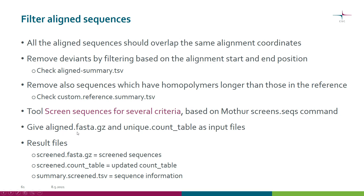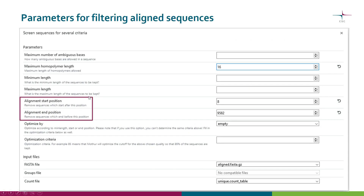As input you give the aligned FASTA file and the unique count table, because it needs to be updated. The relevant parameters are now the alignment start position and alignment end position. For the start position, we want to remove sequences which start after this position, and we also want to remove sequences which end before this particular end position.